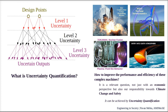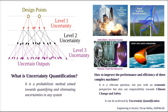Consider we have two design points. Due to level 1 uncertainty — for example, selection of raw materials — the system deviates from its design points. This problem can be magnified with further increases in levels of uncertainty. The science of eliminating and quantifying this uncertainty with the use of probability and statistics is uncertainty quantification.